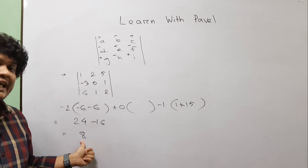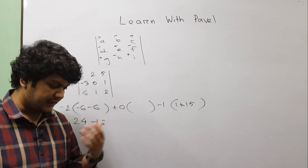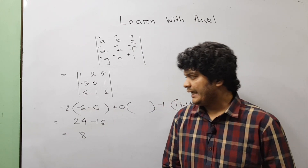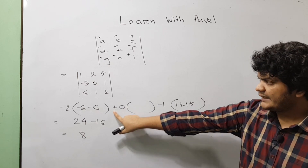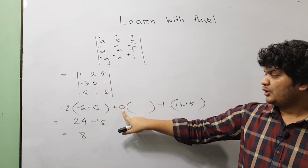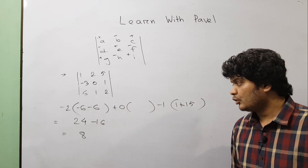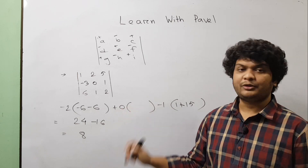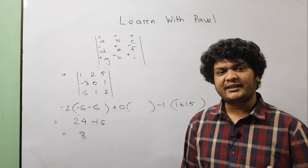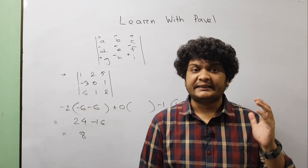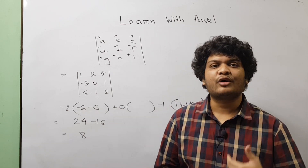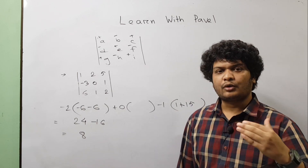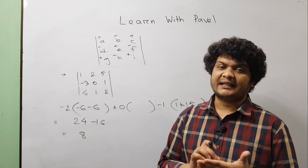We will always try: if a row or column has more zeros in it, we should expand along that row or column so that our calculation becomes very fast. If you have any problems, always note it down. Those who are in my live class should take note of this shortcut.